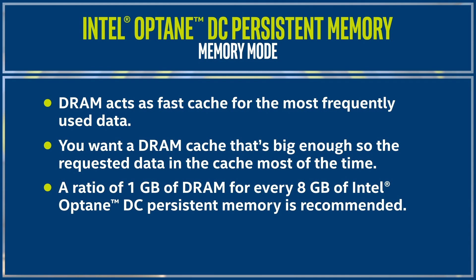Intel recommends a ratio of 1 GB of DRAM for every 8 GB of Optane Persistent Memory. This should provide an adequate DRAM cache for most workloads when using Memory Mode. For example, if you have 1 TB of Optane Persistent Memory, you'll want to have 128 GB of DRAM for an 8-to-1 ratio.